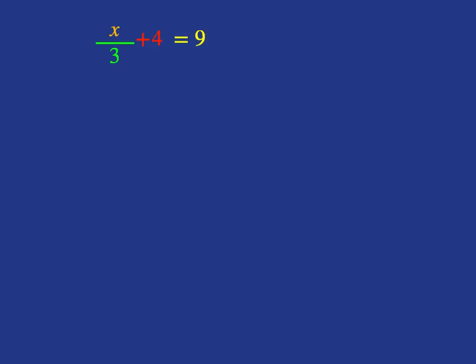Here we have an equation that says x over 3 plus 4 is equal to 9. What does this mean? We start by taking a number x. What's the first thing we do to that x? The first thing is that we're going to be dividing it by 3. And then after we've done that, we then do the next step, which is to add 4. And finally, we say then we get our answer of 9.